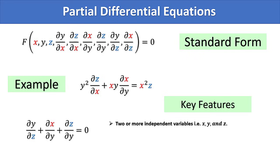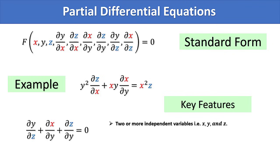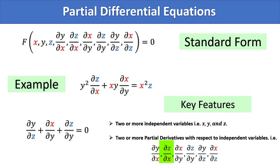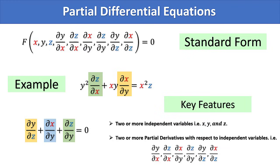You can notice some key features in both equations. It contains two or more independent variables — in the first equation, independent variables are x and y. Another feature is it contains two or more partial derivatives with respect to independent variables, such as partial derivative of y with respect to x, partial derivative of z with respect to x, and so on. In the first equation, two partial derivatives — namely partial derivative of z with respect to x and partial derivative of x with respect to y — are involved. In the second equation, three partial derivatives are involved.